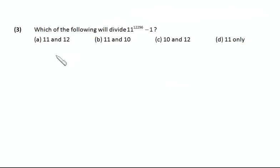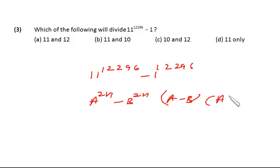Now let's see this problem. Which of the following will divide 11^12296 - 1. Here we can write it's 11^12296 - 1^12296. So it is a^2n - b^2n format. That means a - b and a + b both of them will be factors. That means 11 - 1 and 11 + 1 both of them will be factors, that is 10 and 12 both as well. So this is the correct choice.